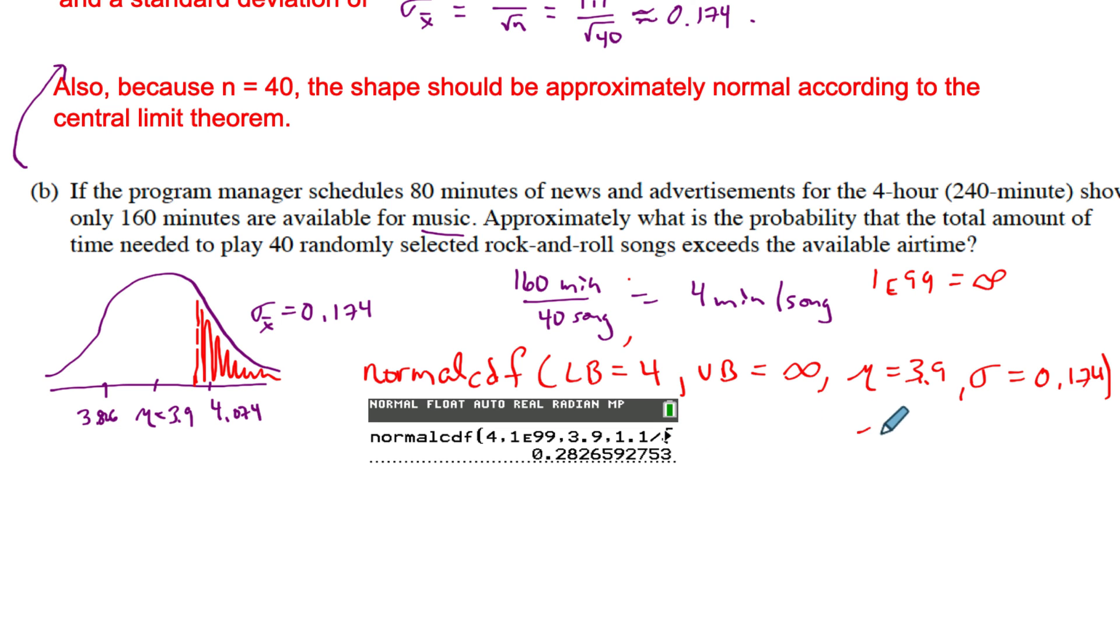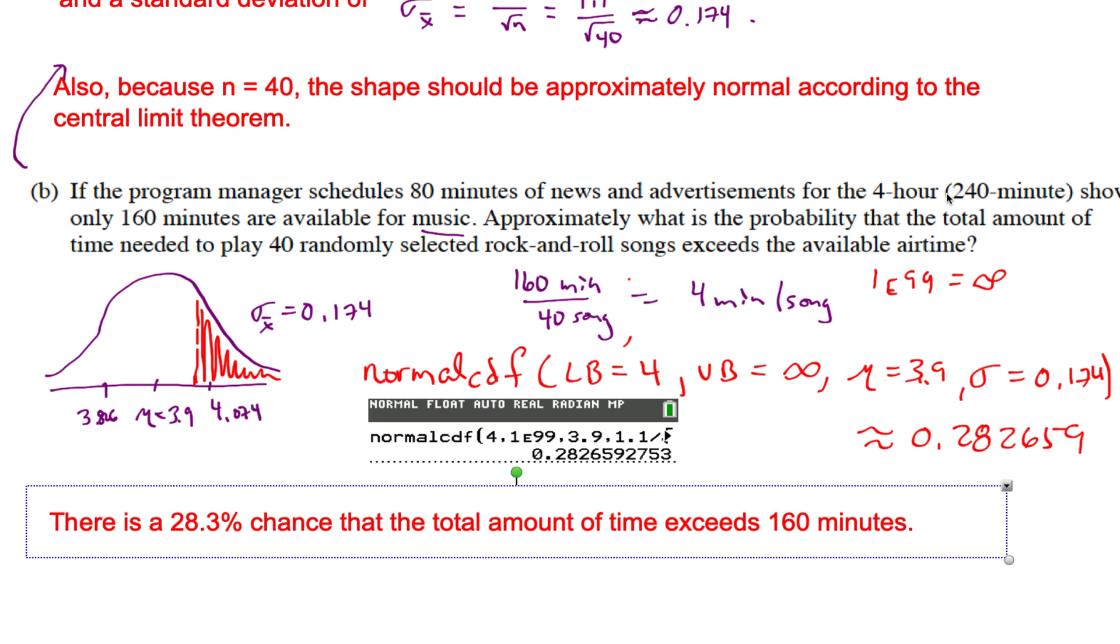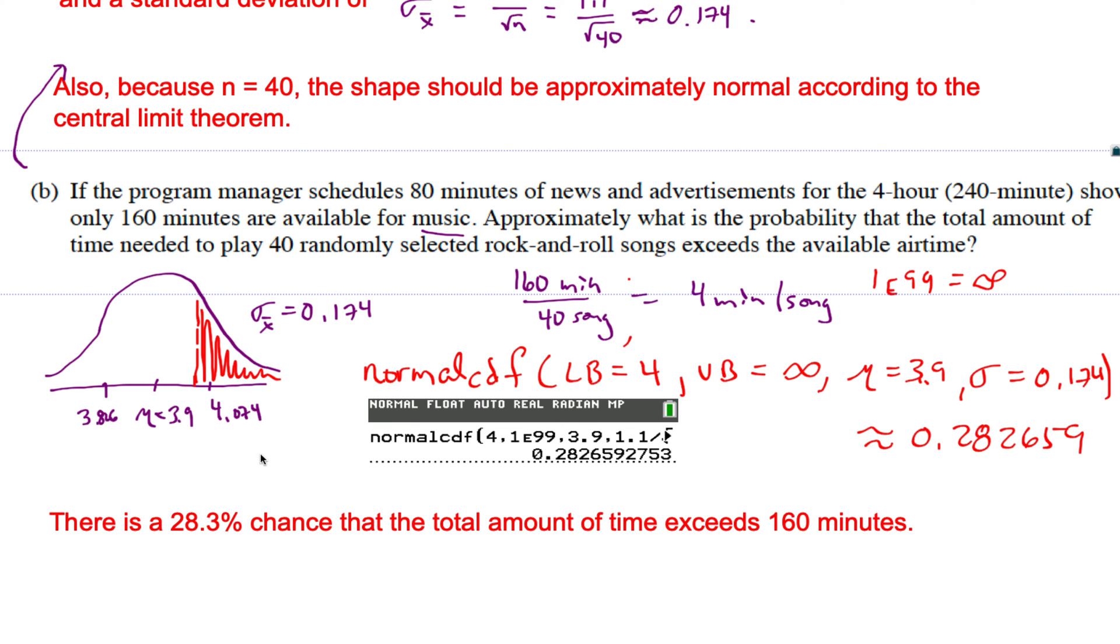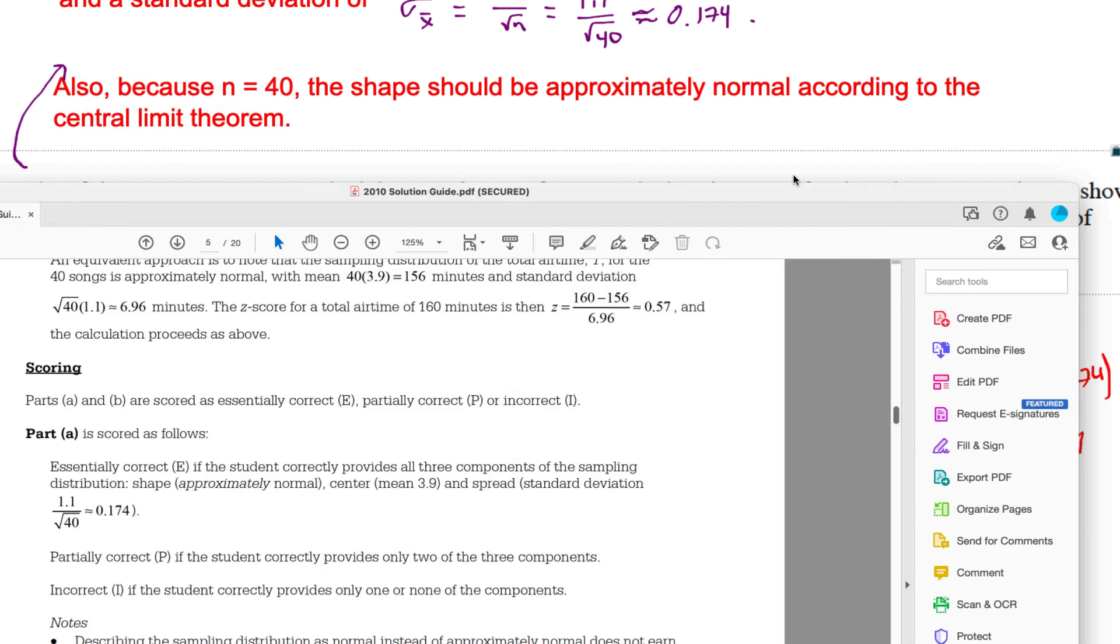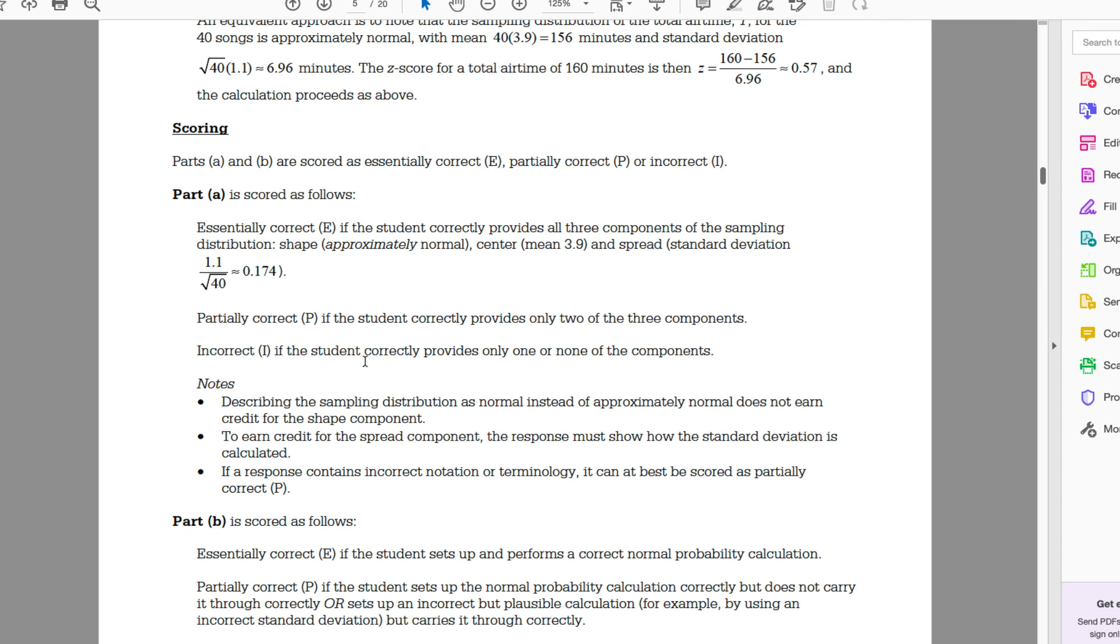So we're going to say this all is approximately equal to 0.282659. But now because we're in AP Stats, probably should make a statement that's in context. So I would write it out: there is a 28.3% chance that the total amount of time exceeds 160 minutes.